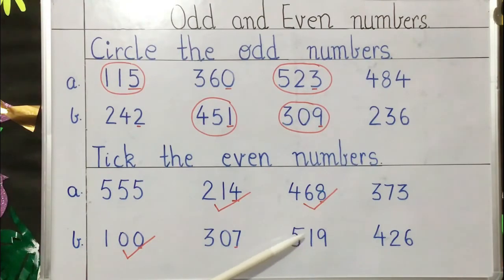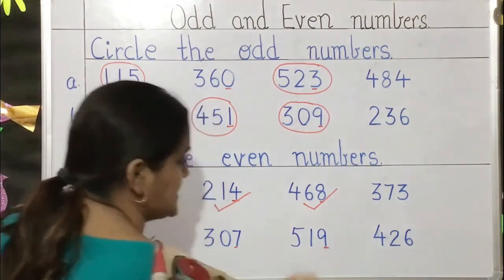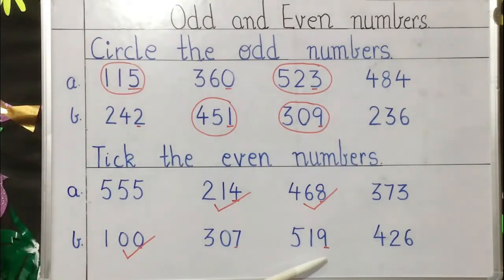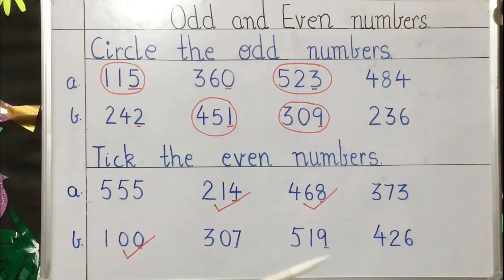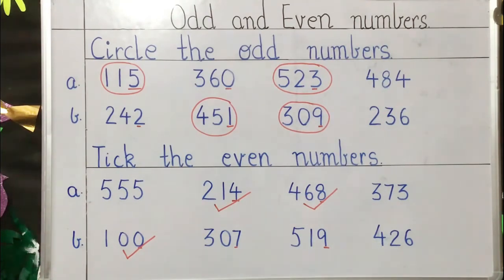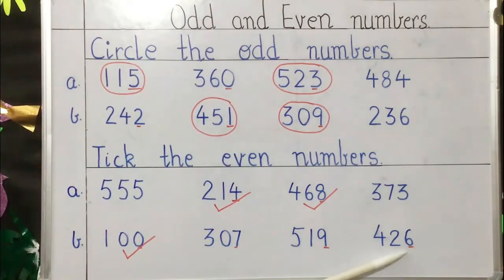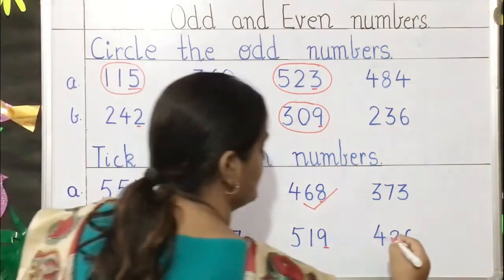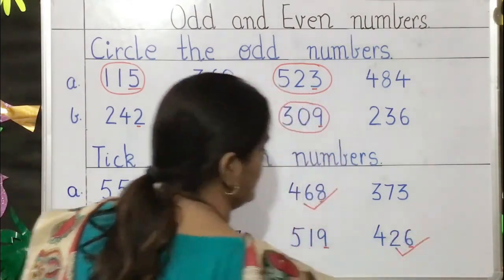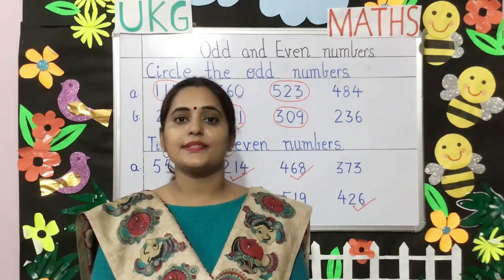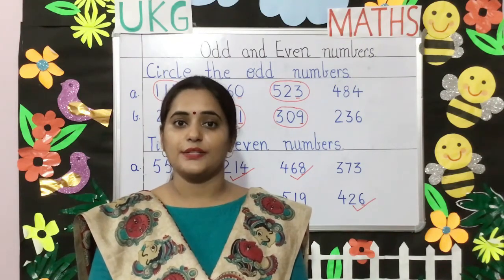The next number is 590 — check the last digit, it is 9 — a number ending with 9 will be an odd number, so we will leave this. The next number is 426 — the last digit is 6 — a number ending with 6 will be an even number, so 426 will be an even number and we will tick this. So children, practice all the topics that we have done today.